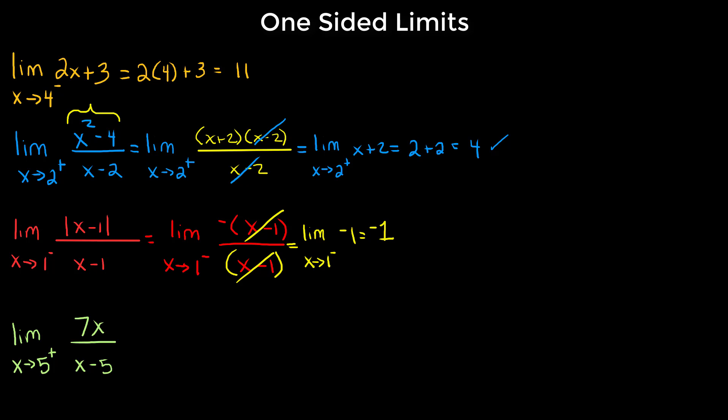We want to get closer and closer to 5 from the right. If we plug in a value really really close to 5 from the right, the numerator 7x is approximately 7 times 5, which is about 35. In the denominator, we're looking at something like 5.000...0001 — a number infinitesimally greater than 5 — and we subtract 5.